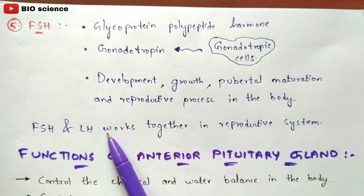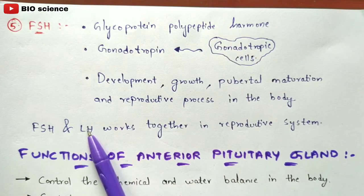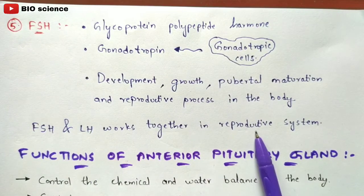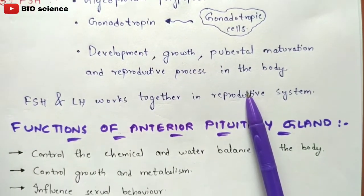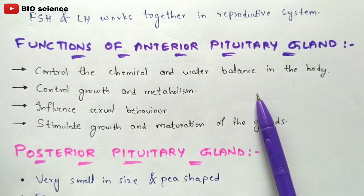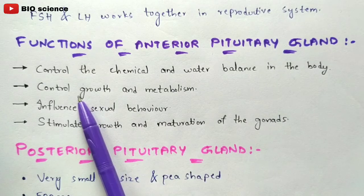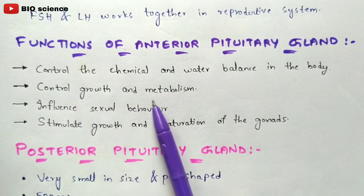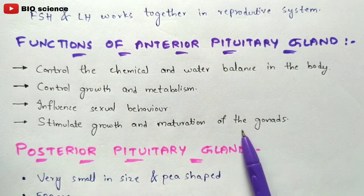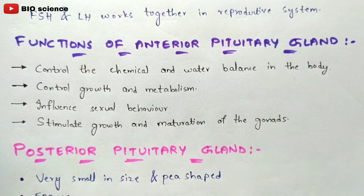The sixth hormone is luteinizing hormone (LH). Both FSH and LH work together, paired in the reproductive system. In summary, the anterior pituitary gland controls chemical and water balance in the body, controls growth and metabolism, influences sexual behavior, and stimulates growth and maturation of the gonads — the sex organs of human beings.